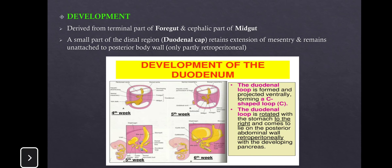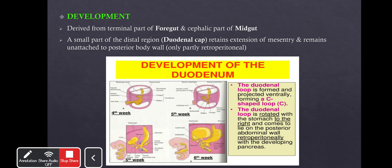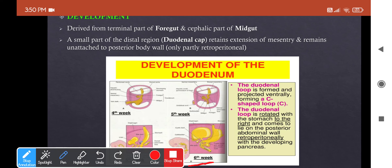The duodenum develops from the terminal part of the foregut and cephalic part of the midgut. This occurs during the 6th week of intrauterine life, when the stomach rotates and the duodenum also loops out, changing its position from the midline to the right side, forming the C-shaped loop. It comes to lie on the posterior abdominal wall retroperitoneally along with the developing pancreas — except for the first part, which retains its mesenteric connection and remains partly retroperitoneal.